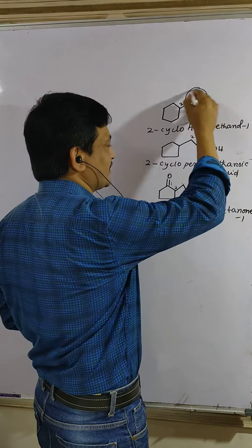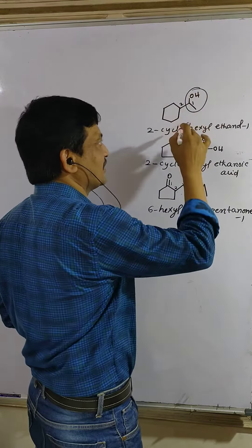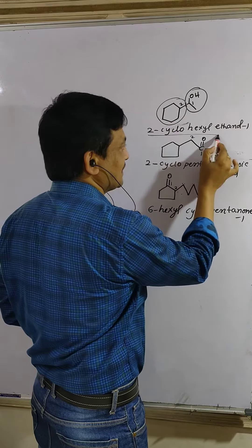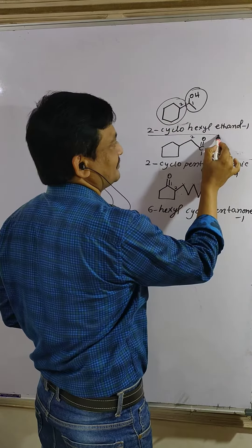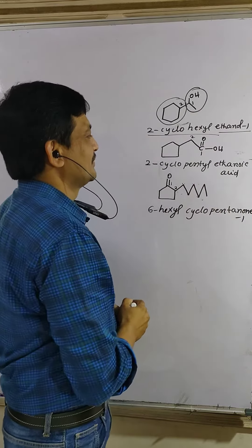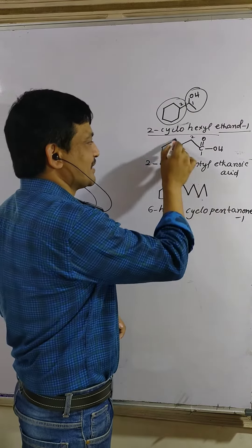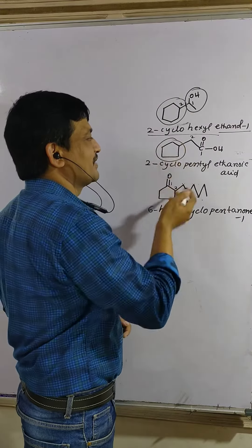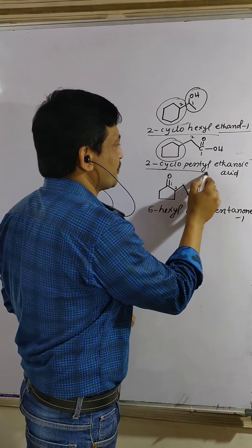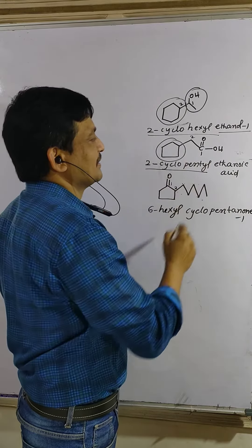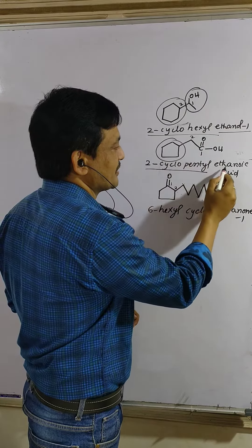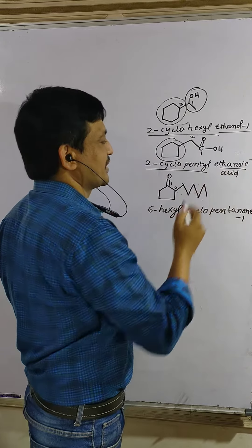Here only two carbons are there — this is the main chain. Two carbons with a cyclohexyl substituent: ethanol-1. Here five carbons are in the ring, but the ring is a second priority group — cyclopentyl ethanoic acid — only two carbons are there in the main chain: ethanoic acid.